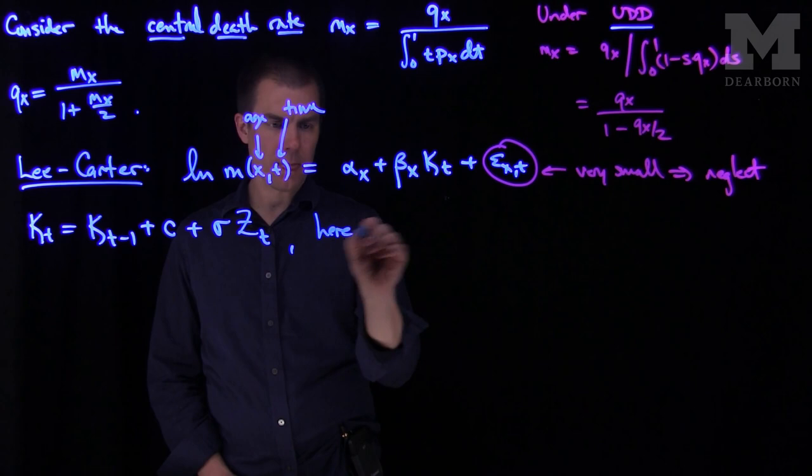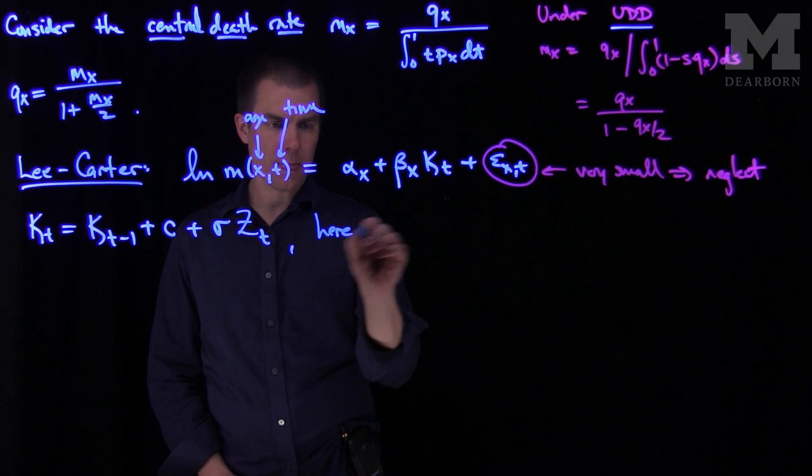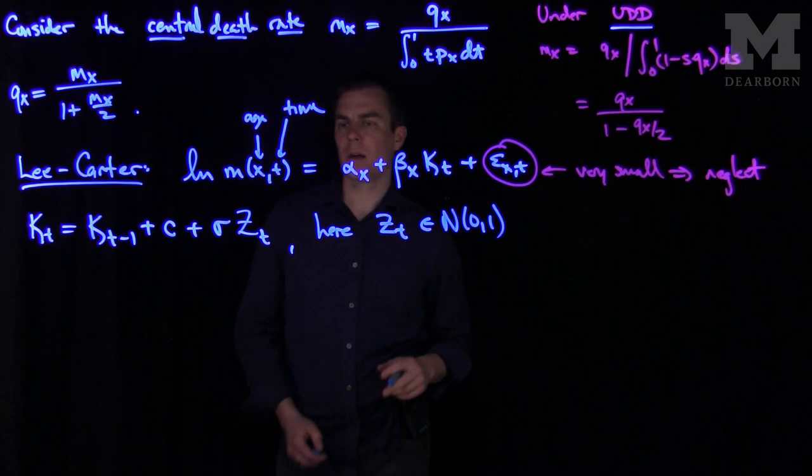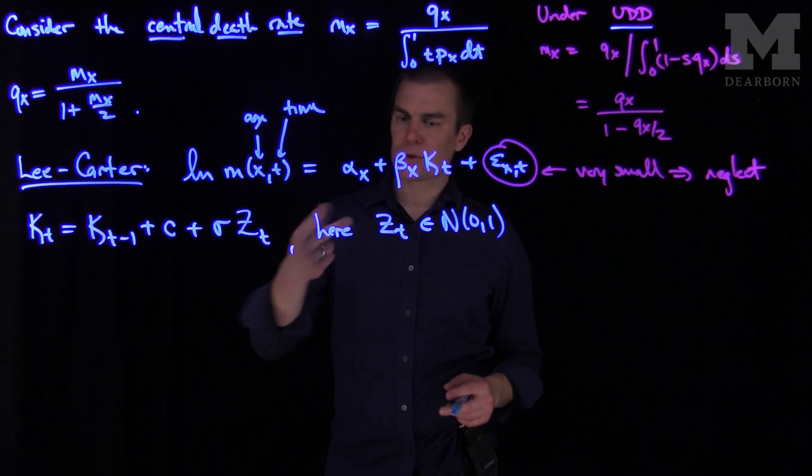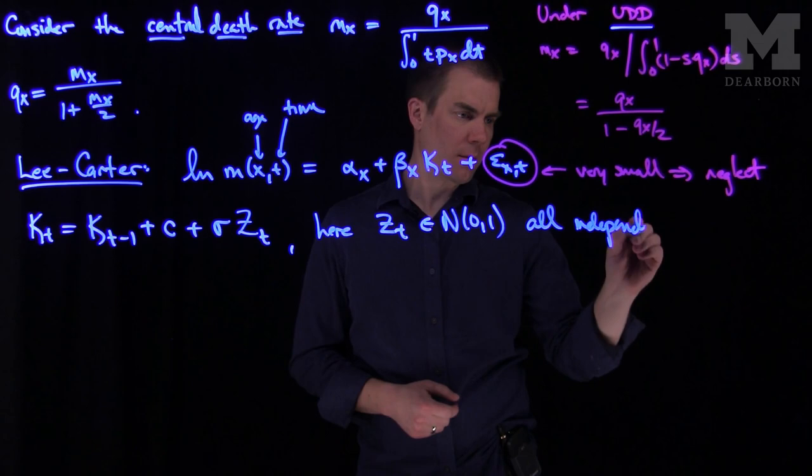And here this zt is normal zero one. And so what we do is as we do more and more terms in this expansion, we get more factors of these normal random variables. And we'll assume that they're independent. All independent.